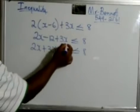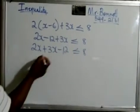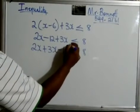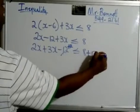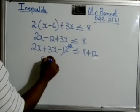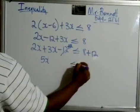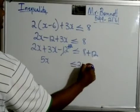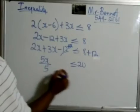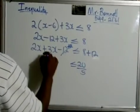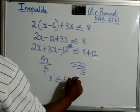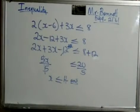So we still need to get rid of this negative 12 because we want to get x by itself. Right? So we add 12, which is the opposite or the inverse. So now we can compute. 2x plus 3x would be 5x. 8 plus 12 is 20. Now, 5 times the number is less than or equal to 20. Divide by both sides by 5. So x is less than or equal to 4. And that would be your answer.